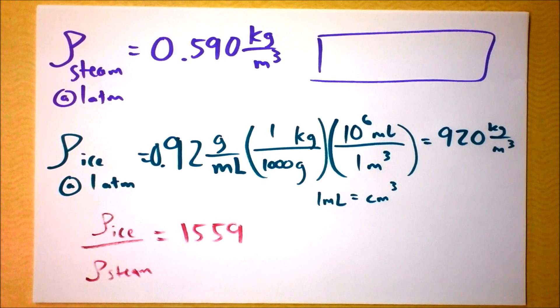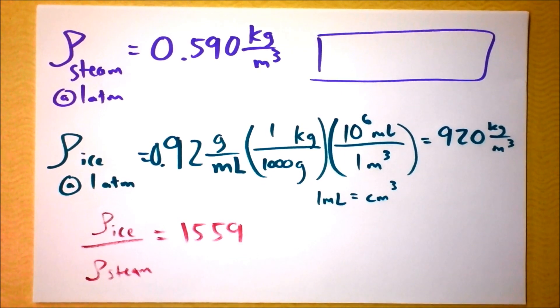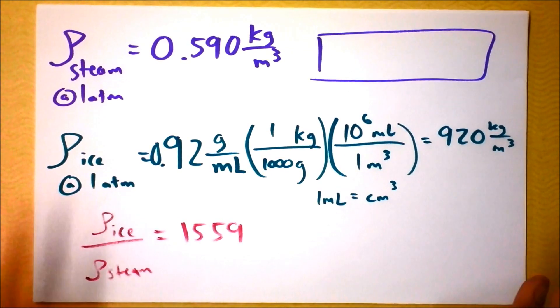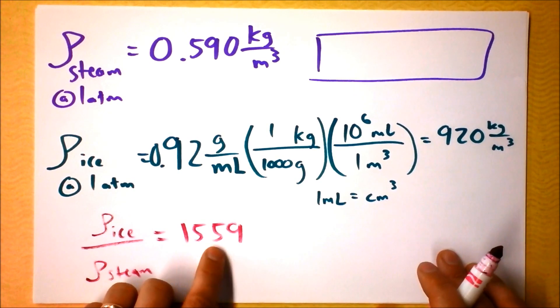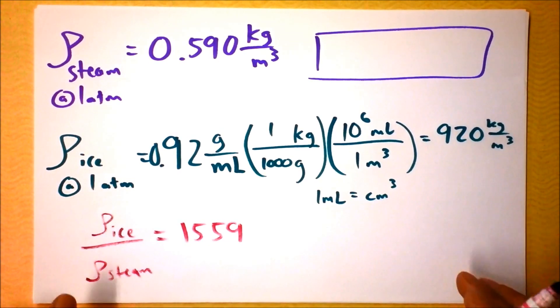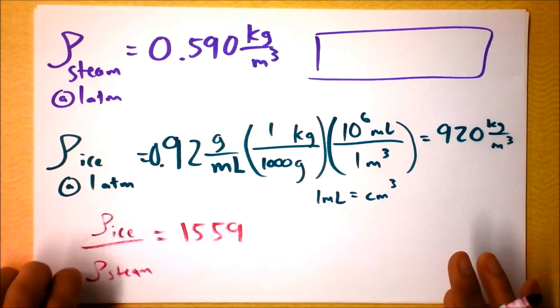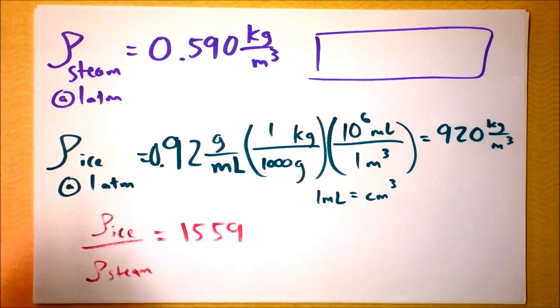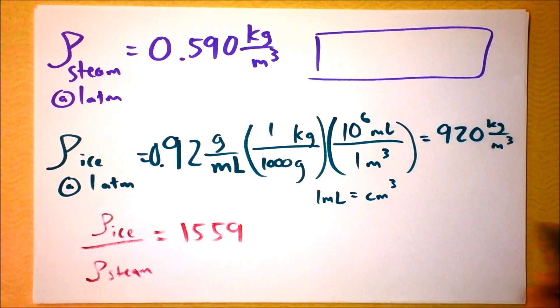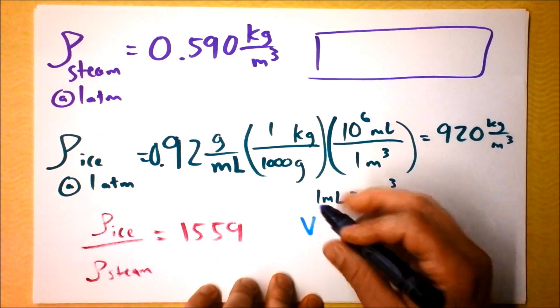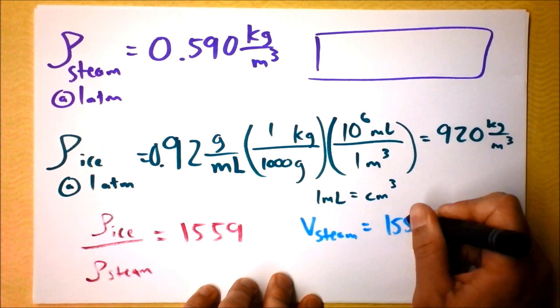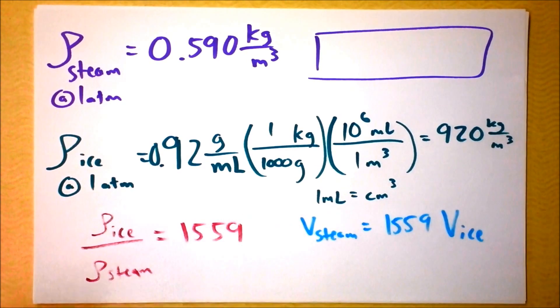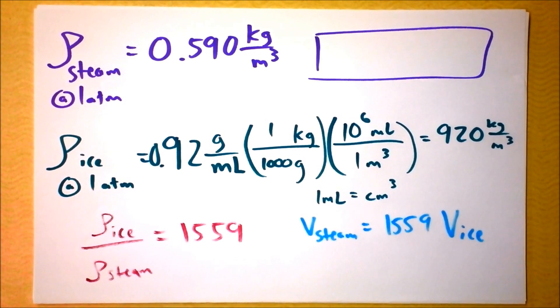That means to me that we have, if these are both at atmospheric pressure, and let's assume that they are when this collision occurs, that means that we've got 1,559 times more volume of steam than we do of ice. I mean, I could do a quick calculation, but hopefully you'll believe me that the volume of steam is 1,559 times the volume of ice.